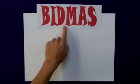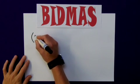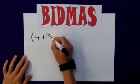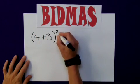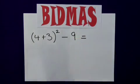Let's apply this theory of BIDMAS to a real example. Let's consider brackets 4 plus 3, close brackets, all squared, minus 9. What does that equal? Well, let's apply BIDMAS.